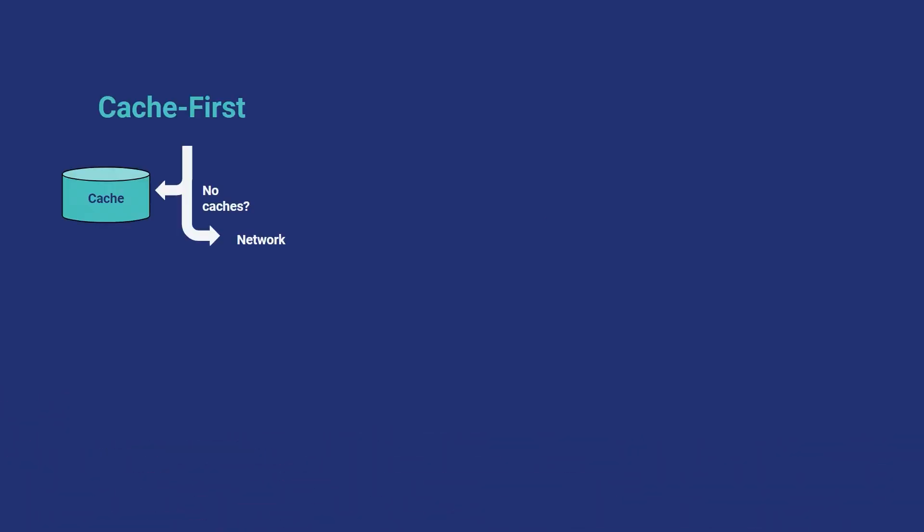I'm going to go through them really quickly. Cache first is the one we probably all use because it's the default. It'll go to the cache — is all the data you're querying there? Grab it from the cache. Otherwise, go to the network.